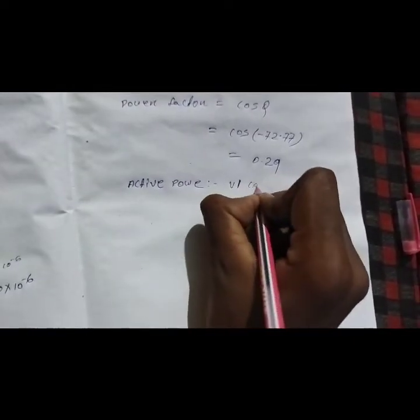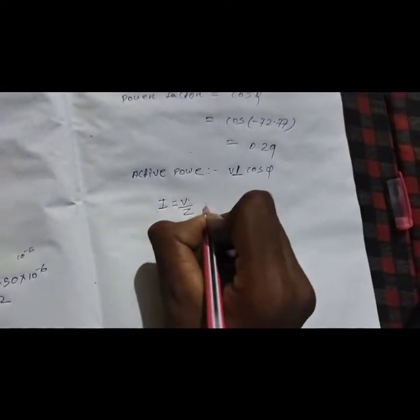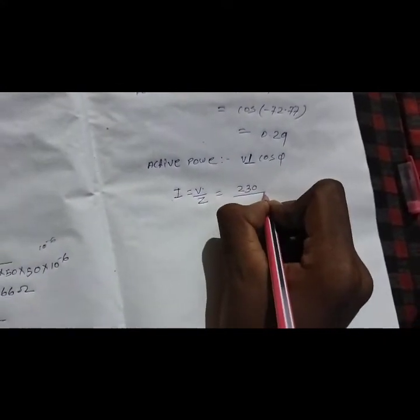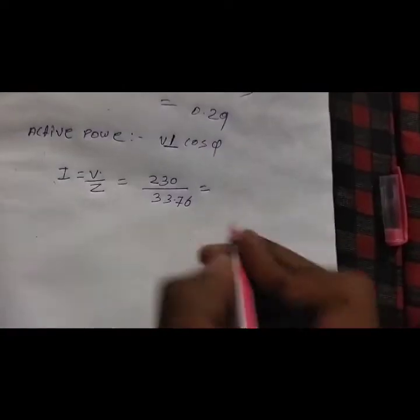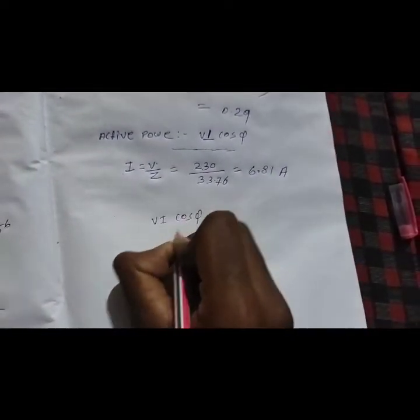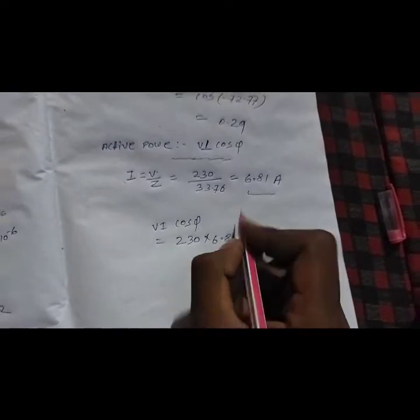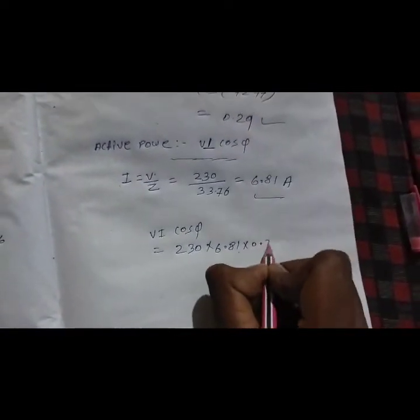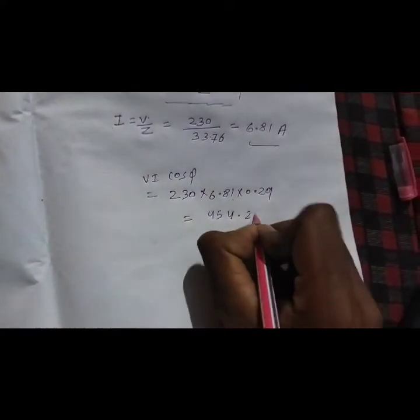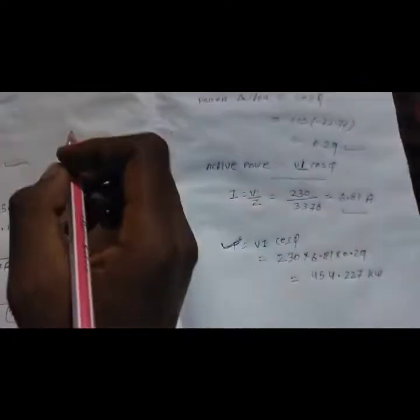Find active power. Active power = V × I × cos φ. We don't know current I, so I = V/Z = 230 / 33.76 = 6.81 ampere. Then active power = 230 × 6.81 × 0.29 = 454.227 watts.